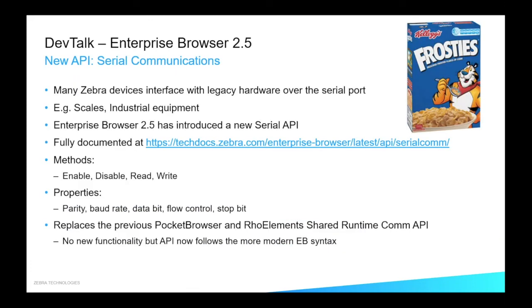A couple of new APIs. There's nothing fantastically innovative here — it's just the serial API, the RS-232 interface. There was already a serial API as part of Pocket Browser and the raw elements shared runtime common API, which sat in between Pocket Browser and Enterprise Browser. There's no new functionality added — it's just a way to interface with serial components. We have a lot of interest from customers who still have to interface with legacy industrial equipment. Scales are a very popular thing that people have to interface with. So yes, a new serial API is available to use, fully backwards compatible with the old API.